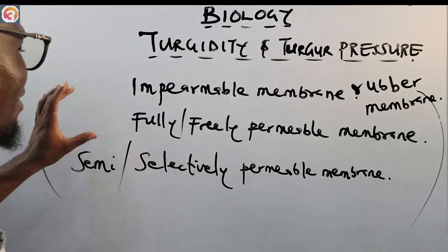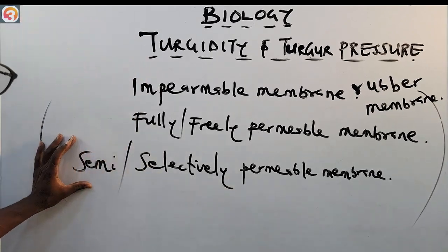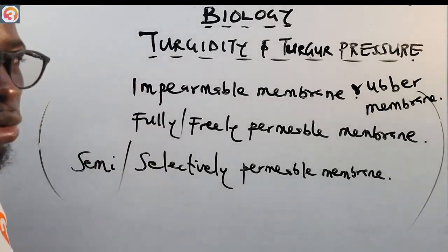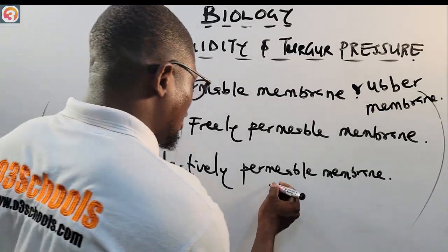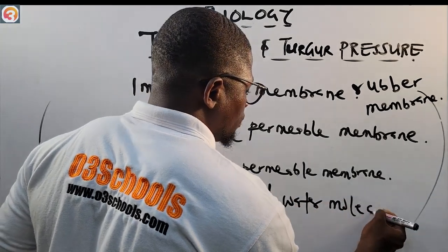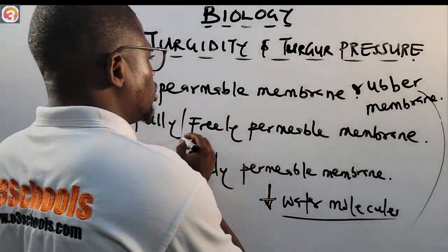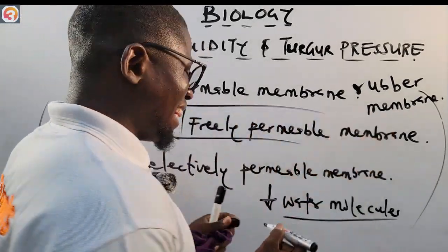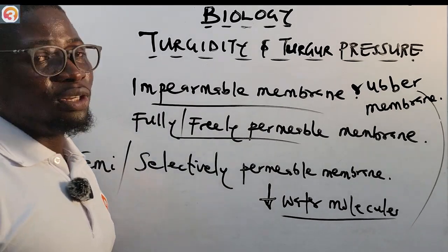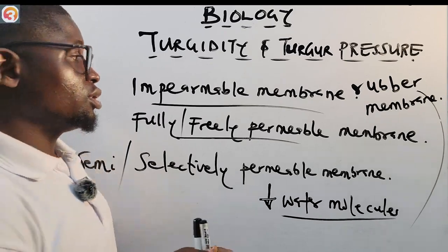The semi or selectively permeable membrane allows water molecules to pass through it, but does not allow solutes to pass through. So to summarize: the impermeable membrane does not allow anything to pass; the fully permeable allows all molecules; and the selectively permeable allows only water molecules but not solutes.